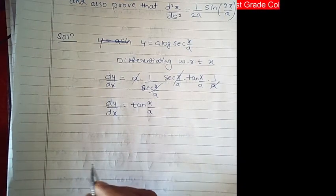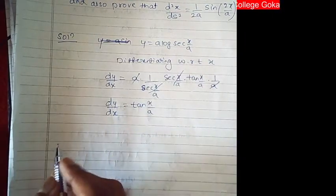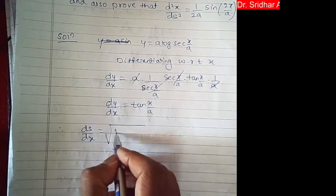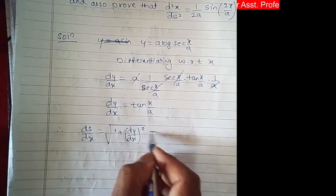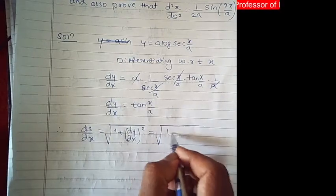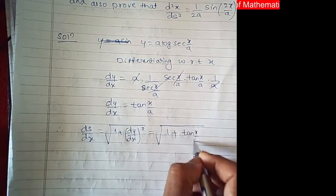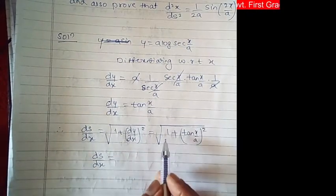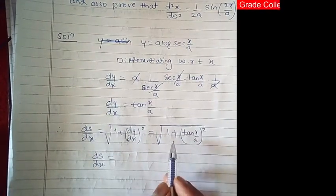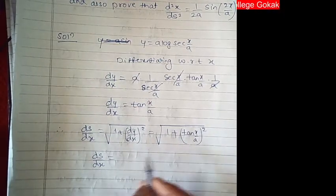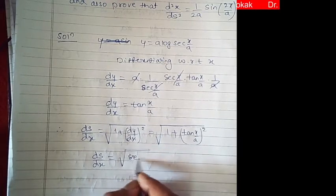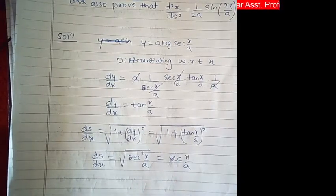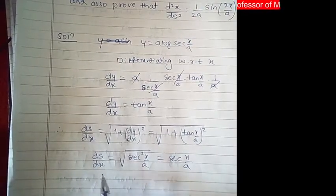After finding dy/dx, next is to find ds/dx. Therefore, ds/dx = √(1 + (dy/dx)²) = √(1 + tan²(x/a)). Now 1 + tan²θ = sec²θ, so this is √(sec²(x/a)) = sec(x/a). Thus we obtain ds/dx = sec(x/a), and the first part is proved.